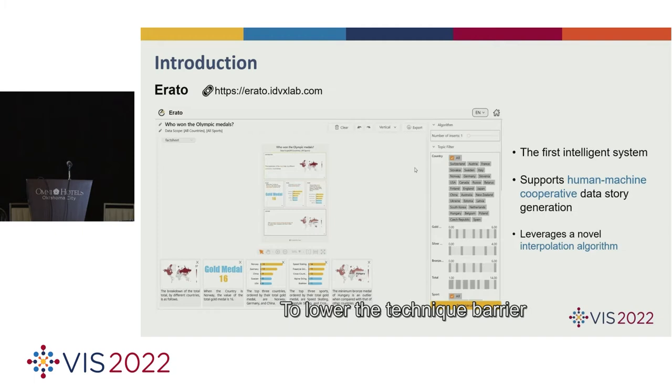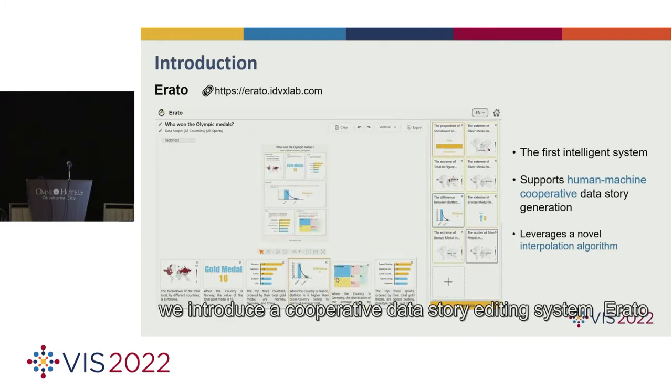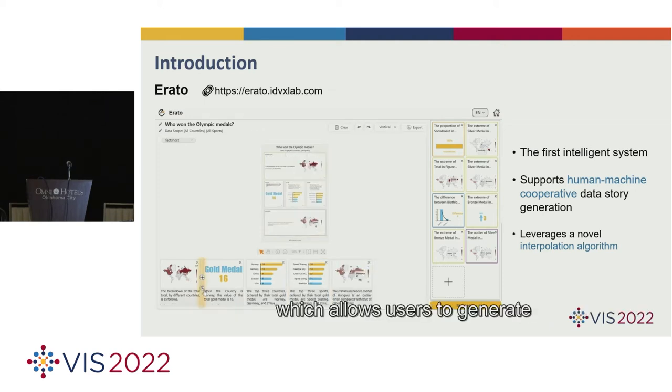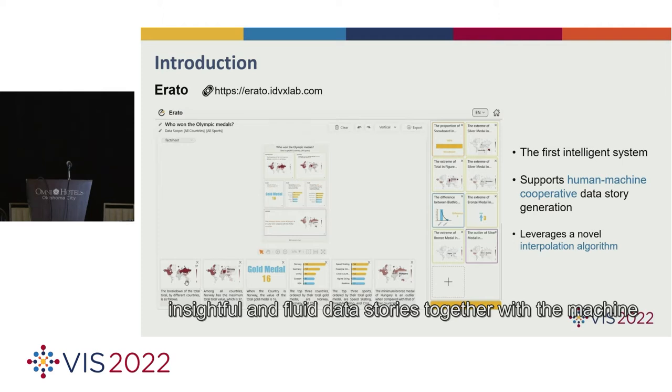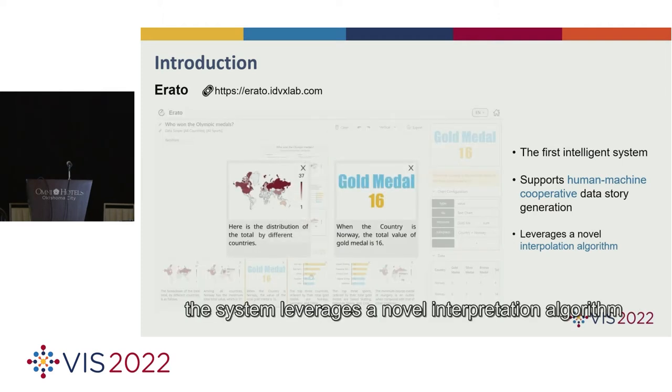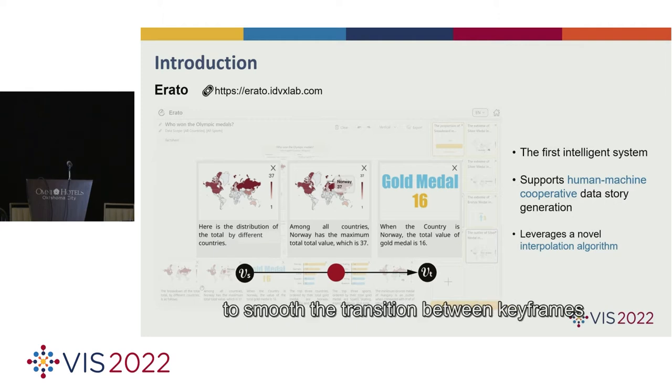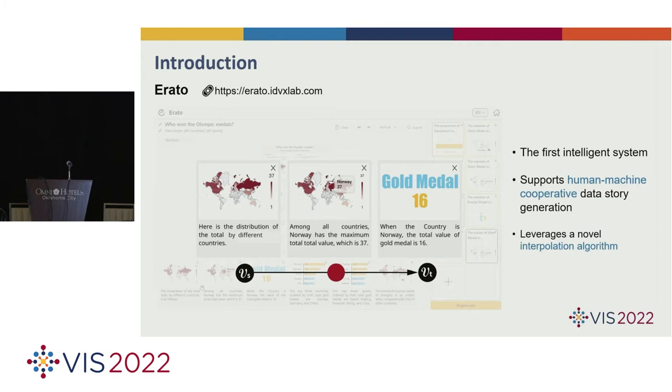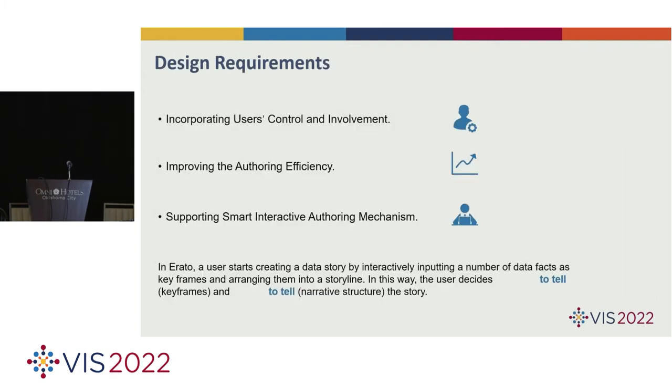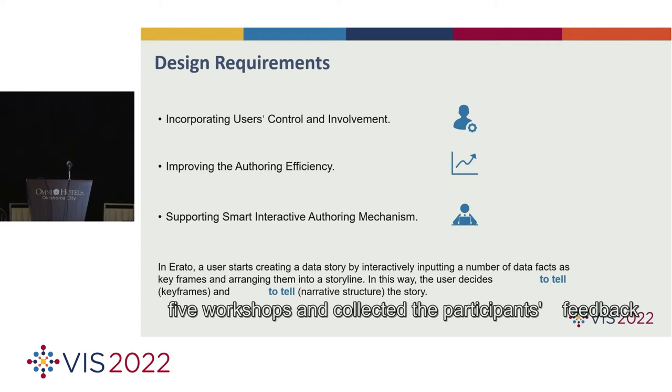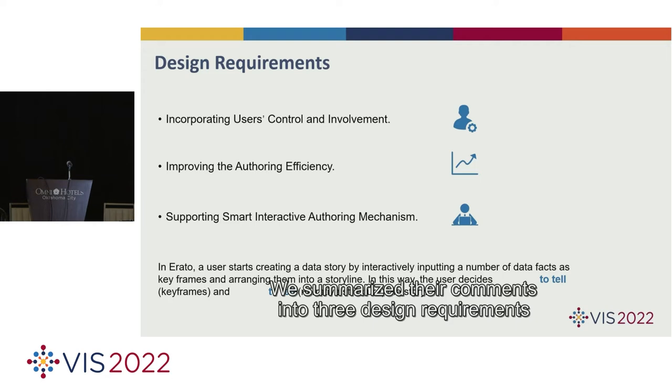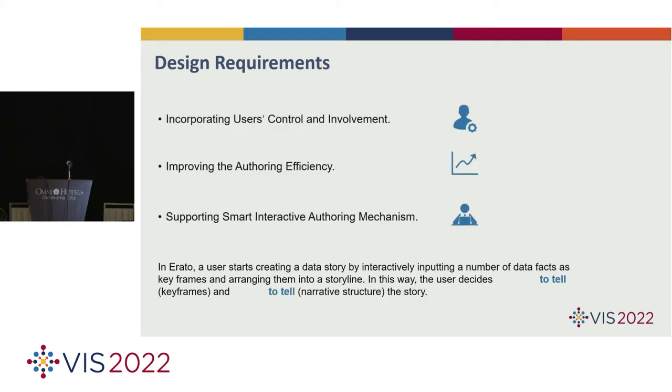To lower the technical barrier, we introduce a cooperative data story editing system, Erato, which allows users to generate insightful and fluid data stories together with the machine. The system leverages a novel interpolation algorithm to help users insert intermediate frames to smooth the transition between keyframes. Before we start our projects, we organized five workshops and collected the participants' feedback. We summarized their comments into three design requirements.